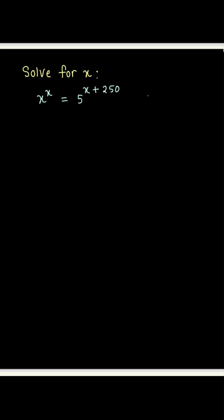The first thing we'll do is make use of the exponent rule that a to the power m plus n can be written as a to the power m times a to the power n. We use this to break down the right-hand side: 5 to the power x plus 250 into a product — 5 to the power x times 5 to the power 250.